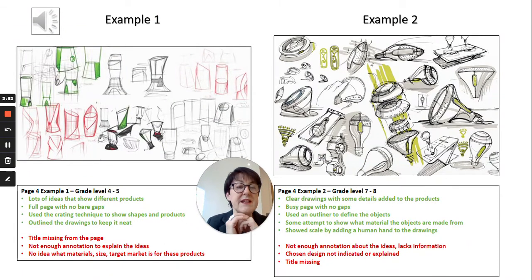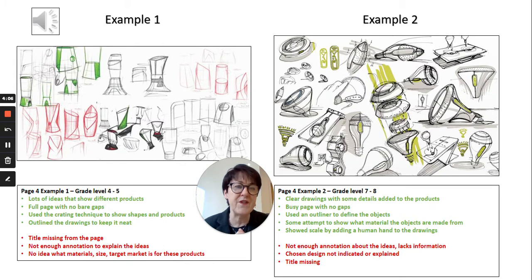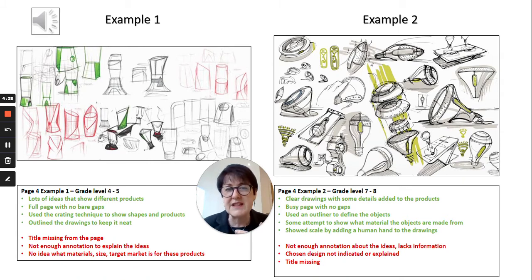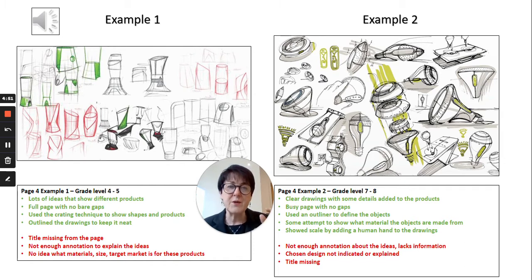Here are two examples of design sheets from the internet. Example one is an average example - around level four to five. It has a range of design ideas and quite a lot of them, with some very nice drawings, but very little annotation. There's no communication apart from the drawing to tell us what's going on. There's also a title missing - it should say 'design ideas' clearly somewhere on the page. The annotation would give this student a chance to really explore the good and bad points of these designs and think about materials or manufacturing. There's no communication on this page to explain how this suits the target market.